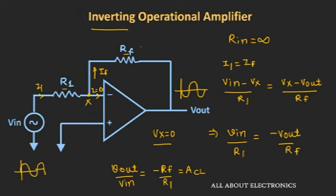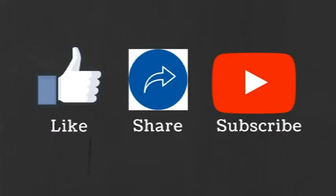For example, if RF equals 2 kΩ and R1 equals 1 kΩ, then the gain of the op-amp will be 2. If we apply 1V at the input, we get 2V at the output, which is 180 degrees out of phase with the input. In this way, by controlling RF and R1, we can control the gain and use the op-amp as an amplifier. I hope this video helped you understand the inverting op-amp configuration and the concept of virtual ground. If you have any questions or suggestions, let me know in the comments. If you liked the video, hit the like button and subscribe for more.